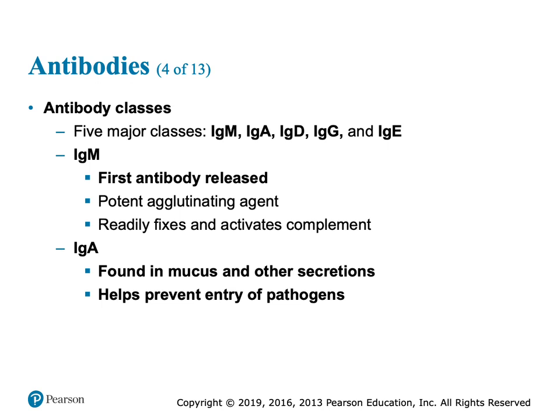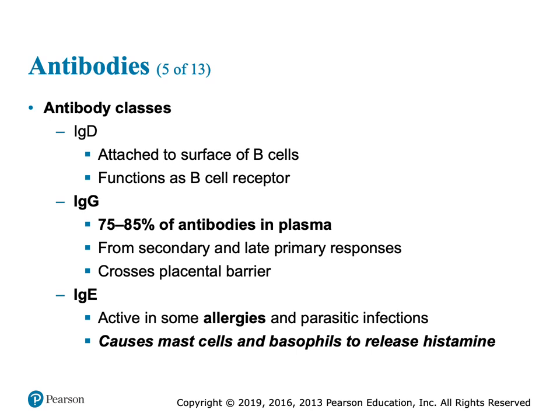IgA is found in our nose and mucoid secretions — his job is to prevent a pathogen from getting past point A. IgG — the majority of our antibodies floating around in plasma are IgG. They're long-lived, usually coming from the secondary response. They can cross the placental barrier — there are the passively acquired antibodies from mom. IgE shows up with allergies — you can do IgE testing. This immunoglobulin E can cause mast cells or basophils to release their histamine. Mast cells are the first responders to a cut or a bee sting.